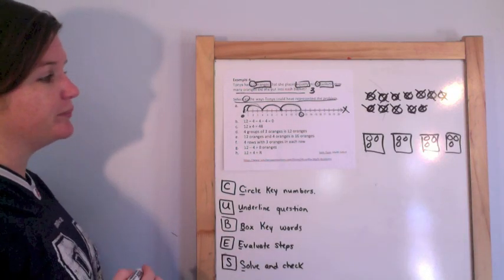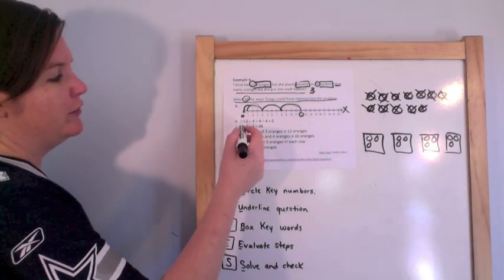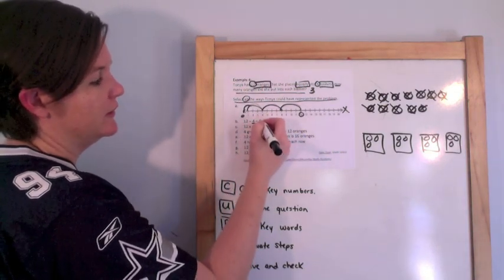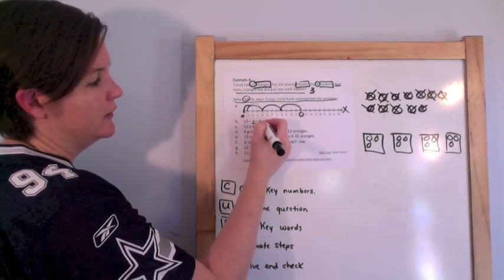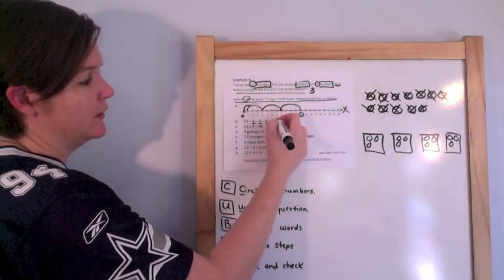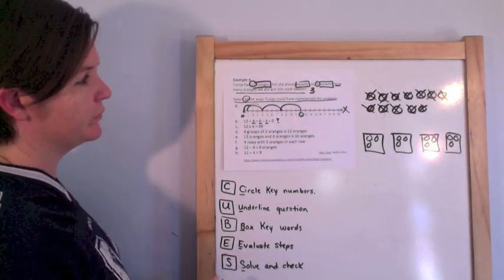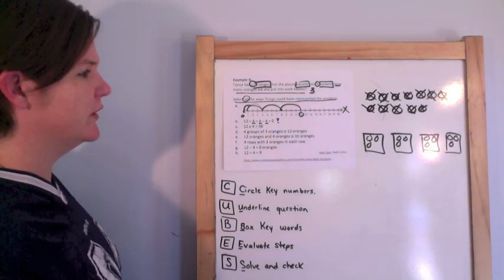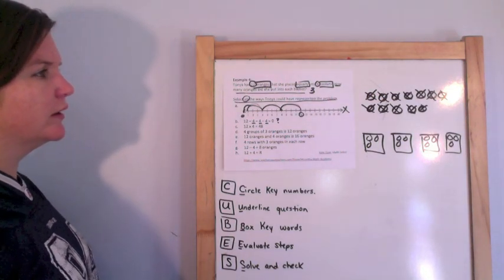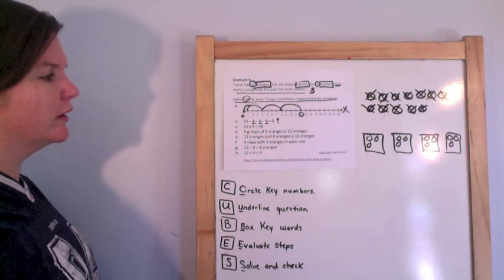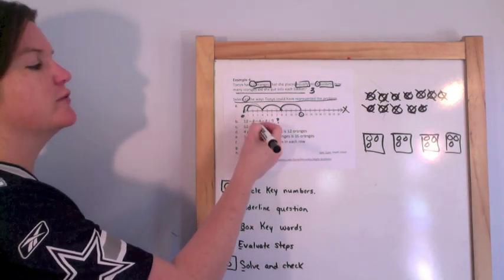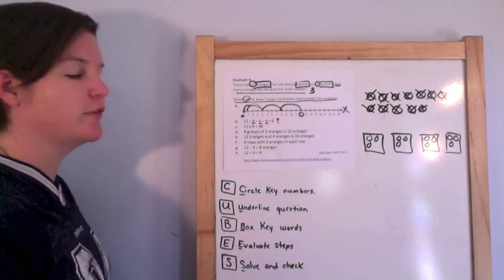Option B: twelve, take away four for a basket, take away four, take away four — that works. That's like twelve minus a basket of four, minus a basket of four, minus a basket of four — yes, that's correct.